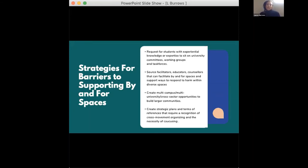It's really important to do this work in all areas, so building strategic plans and terms of reference that require recognition of cross-movement organizing and the necessity of caucusing allows for spaces that are not focused on diverse LGBTQ2S plus identities to do some of the labor without putting the burden back onto those communities.